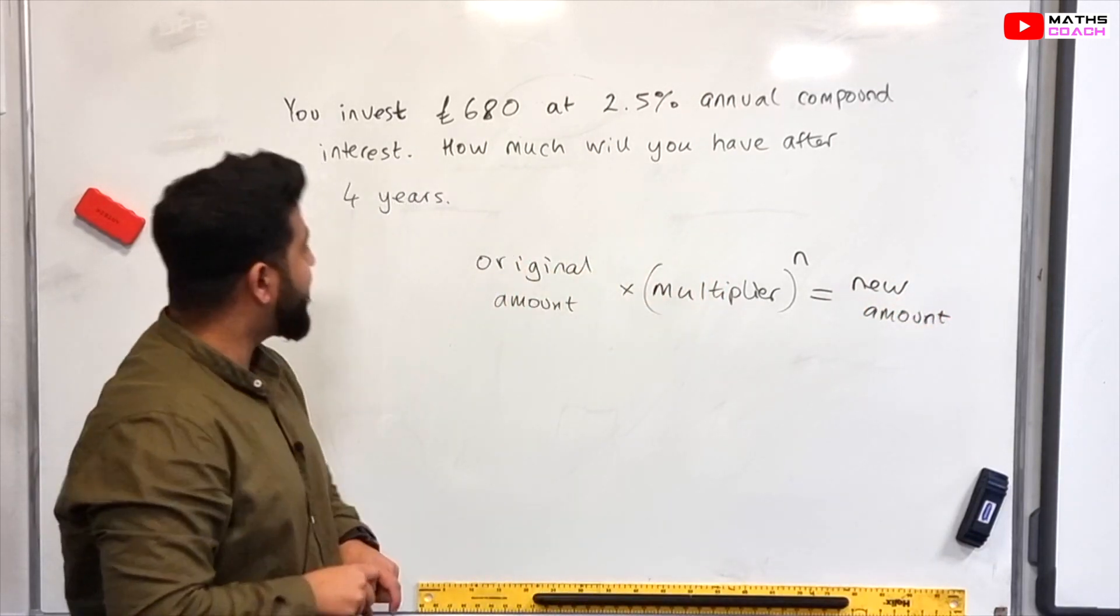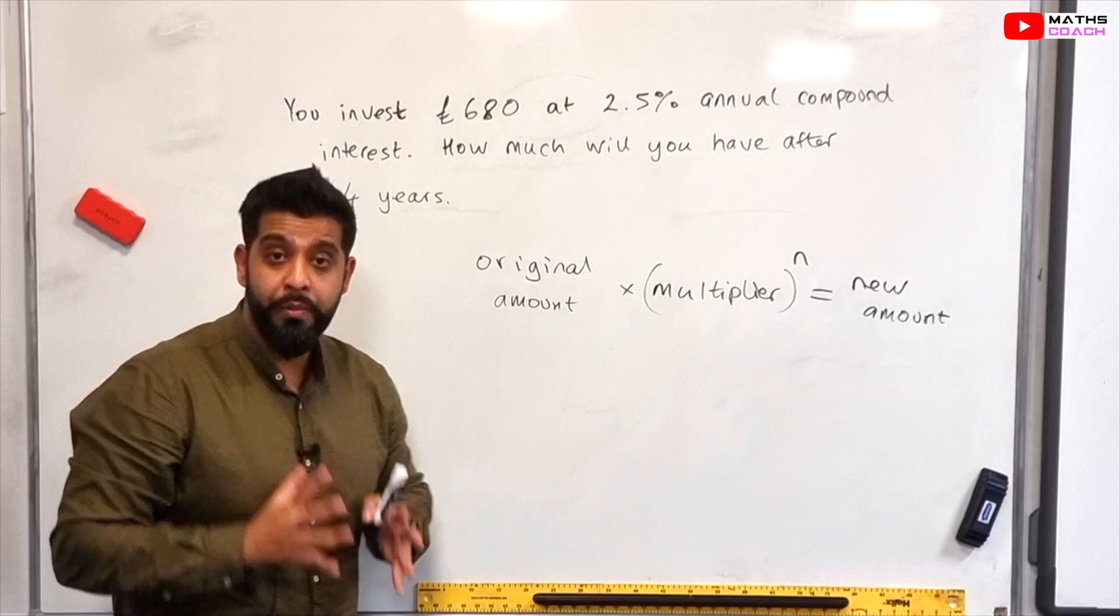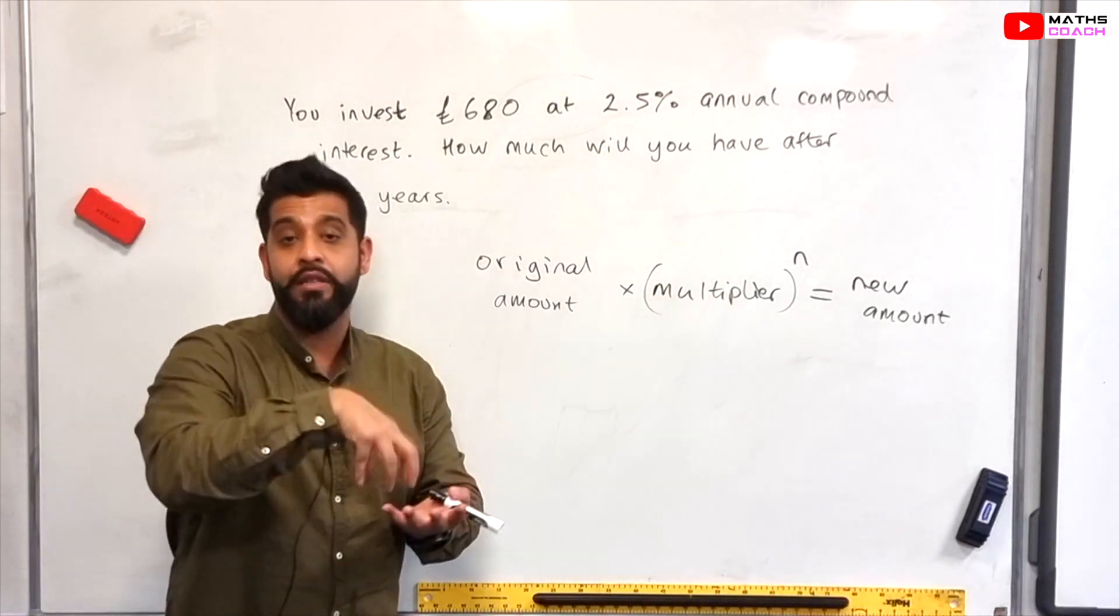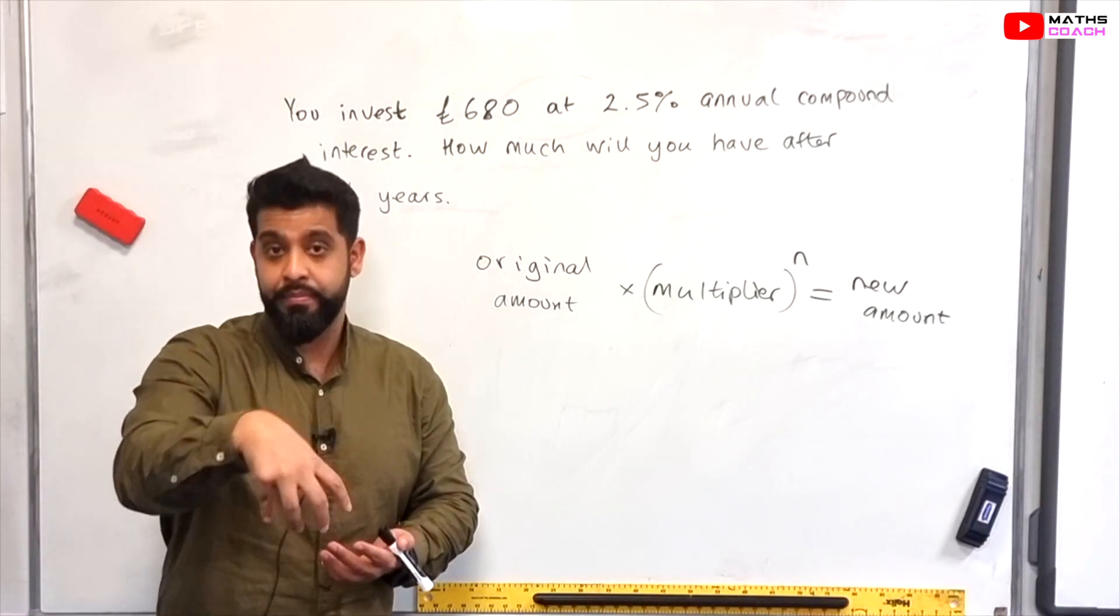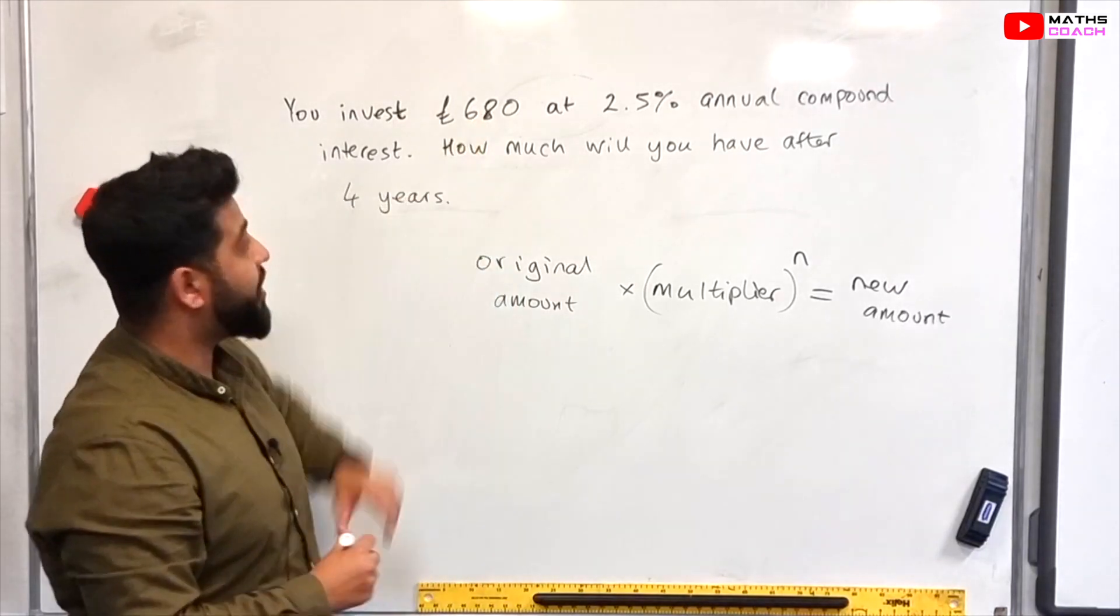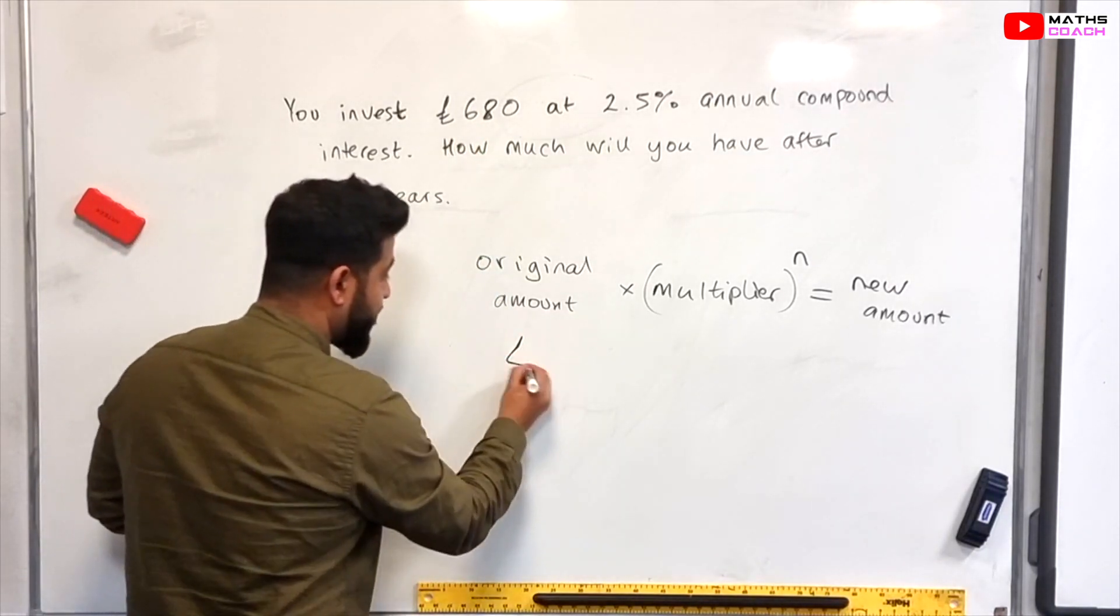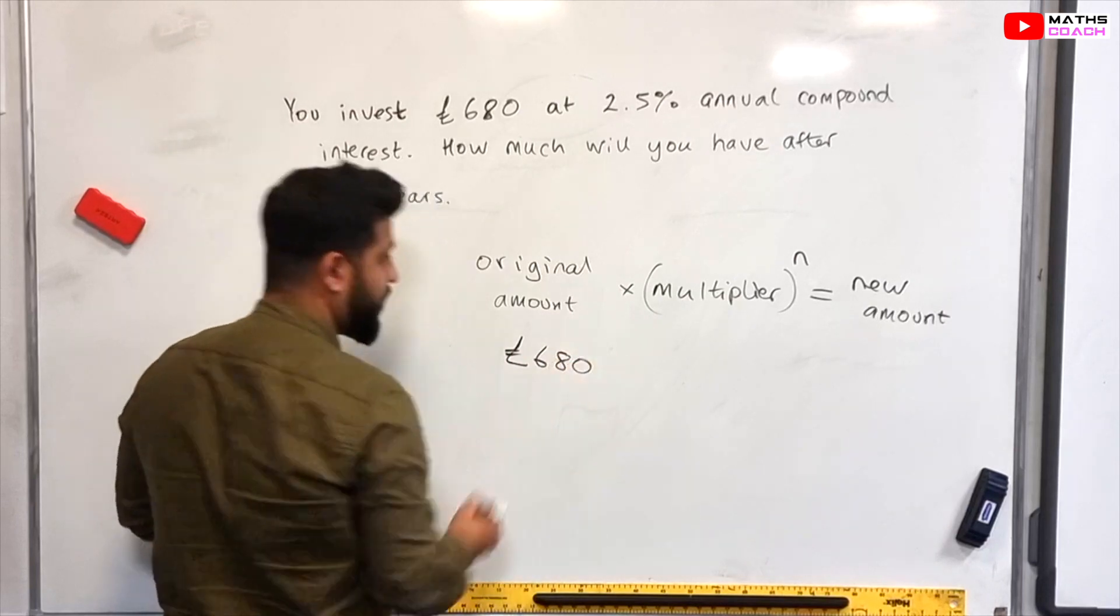So let's begin. What is our original amount? What is our principal amount? The amount that we put into the savings account at the beginning? It is 680. So 680 will go there.